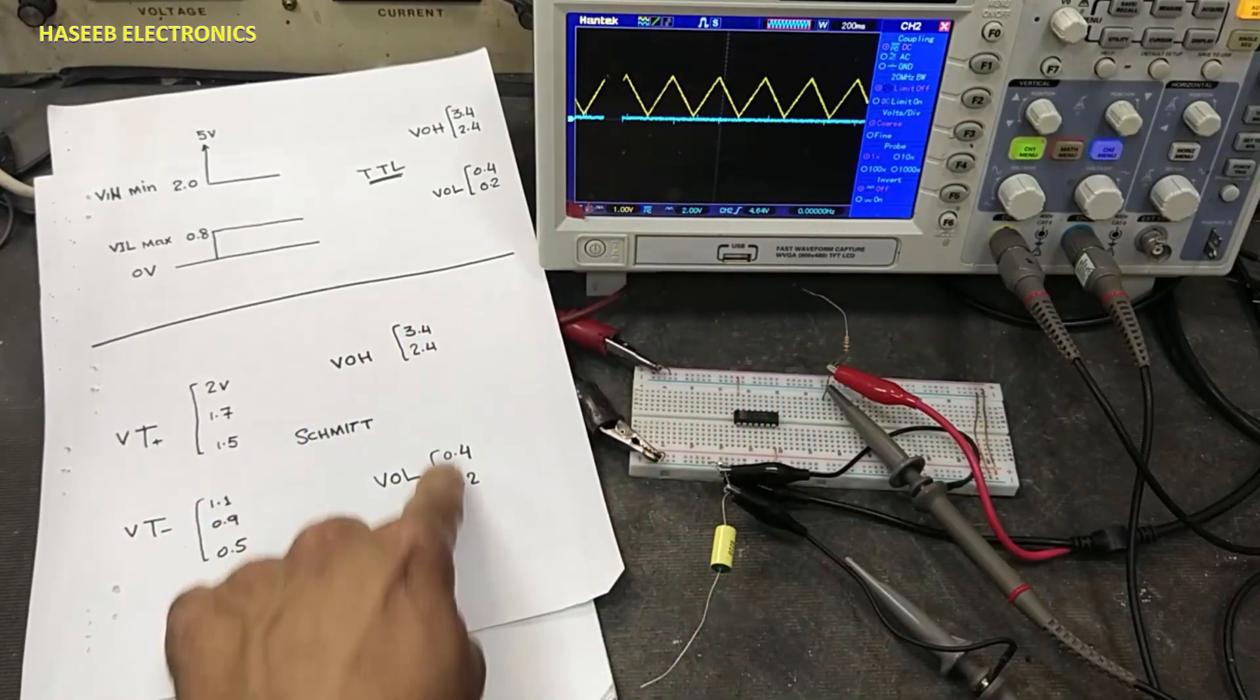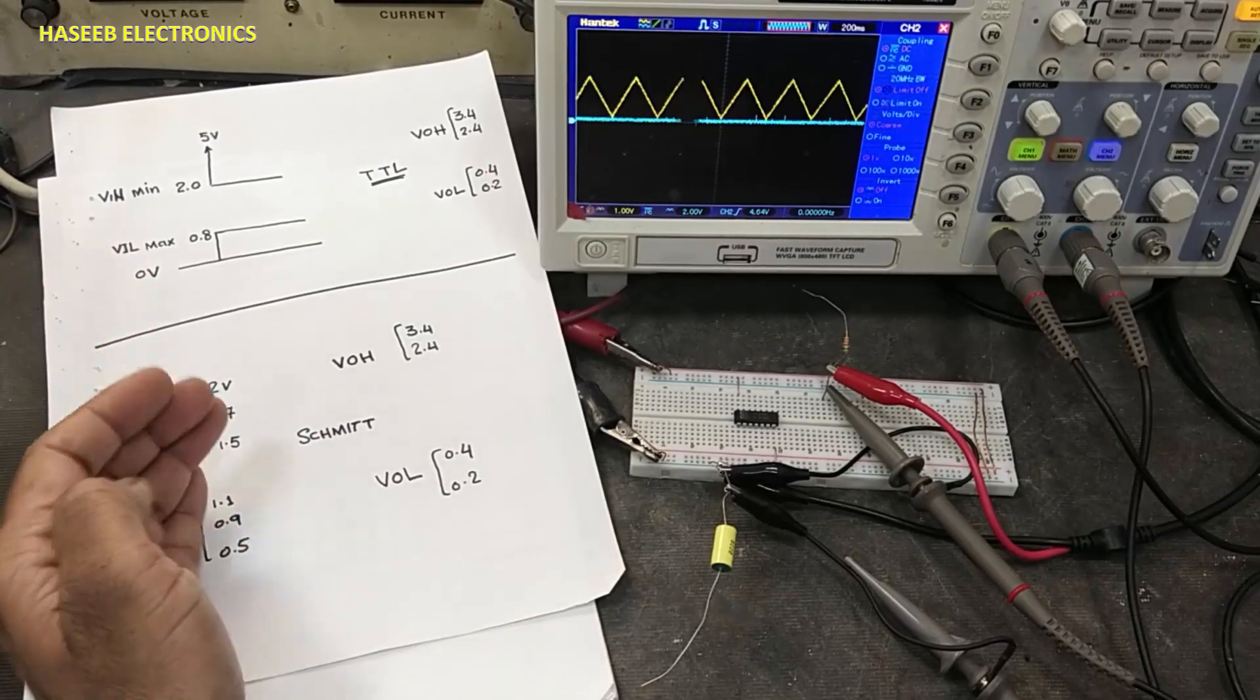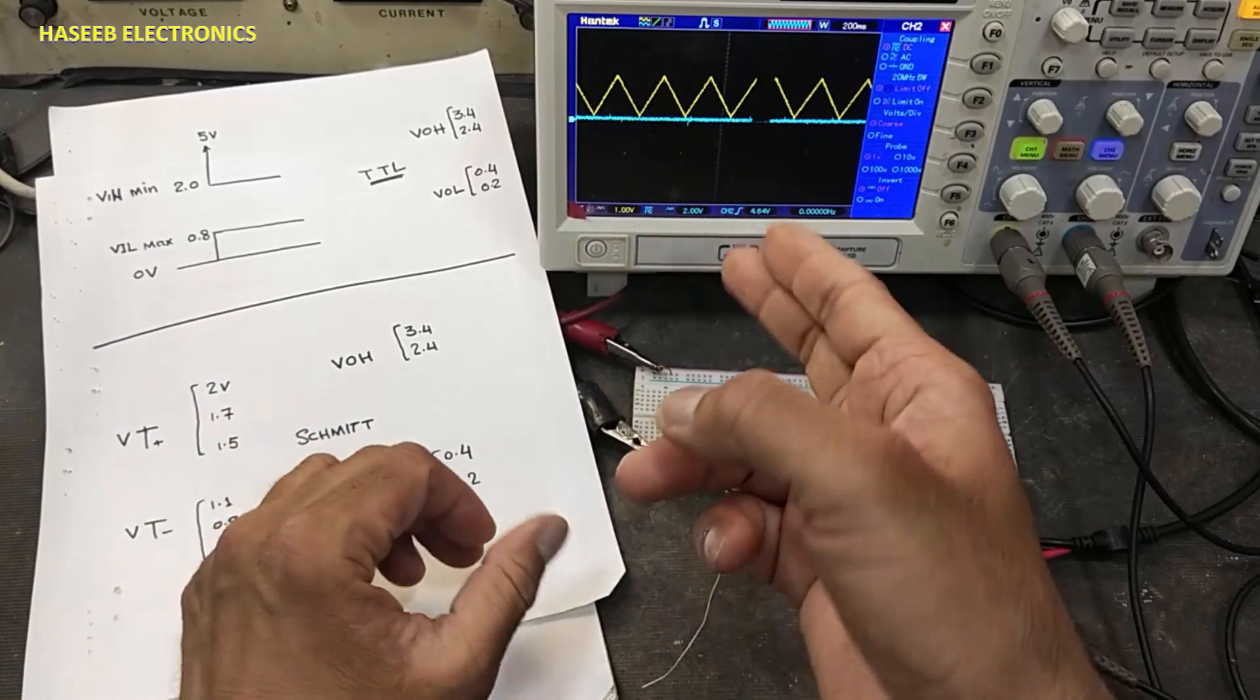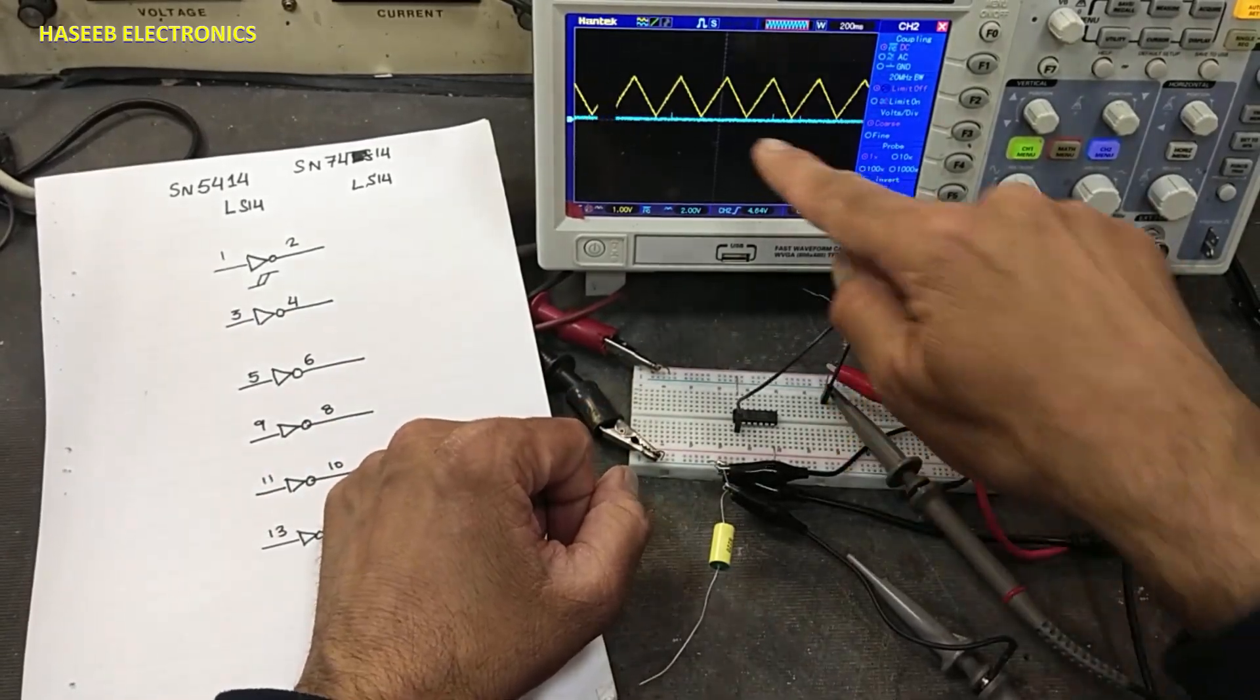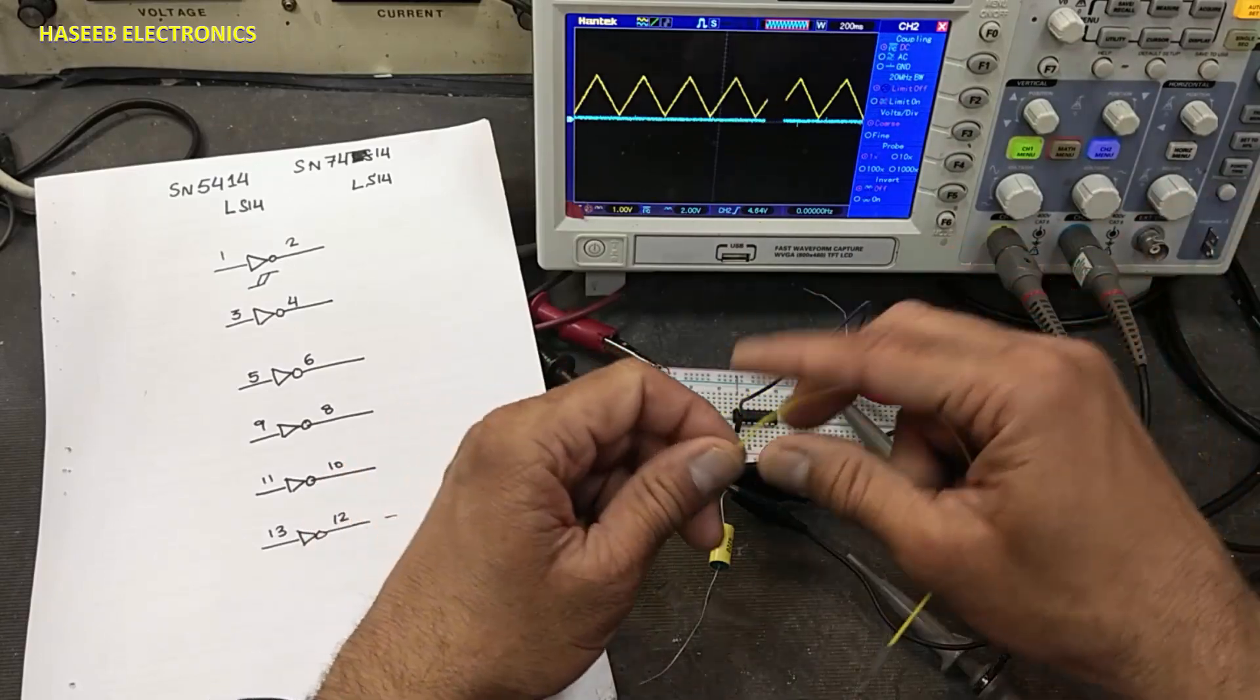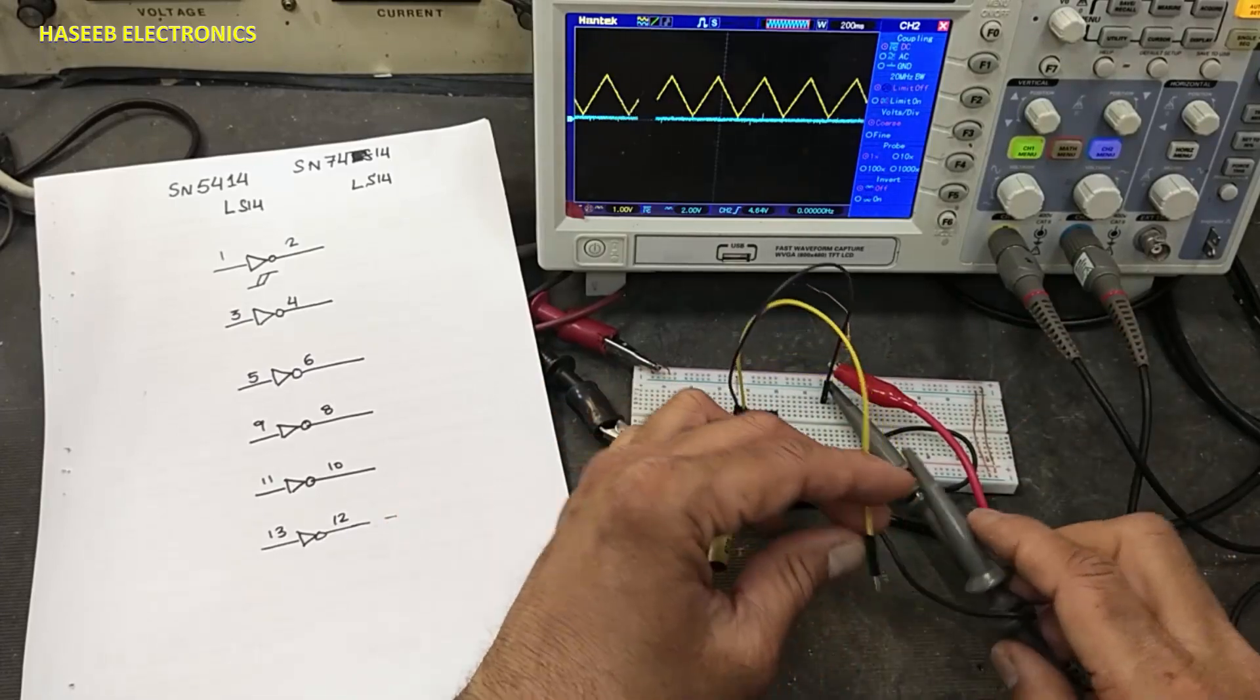We can say it will convert ramp signals or varying amplitude signals into digital pulses. Let's check it practically. Pin 1 is input—I apply a 2-volt ramp signal to pin 1 input. Pin 2 is output.